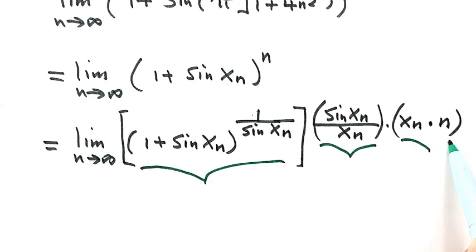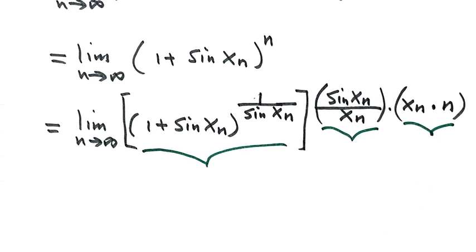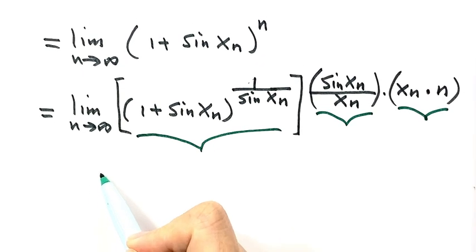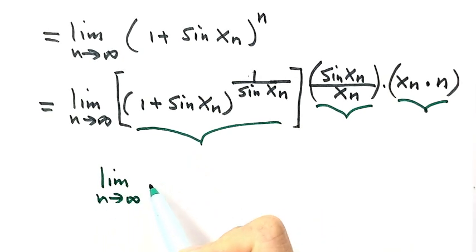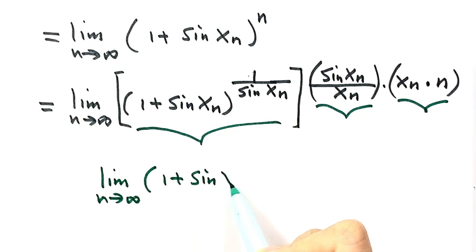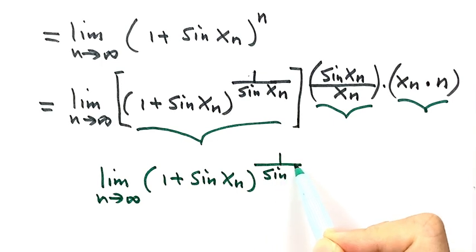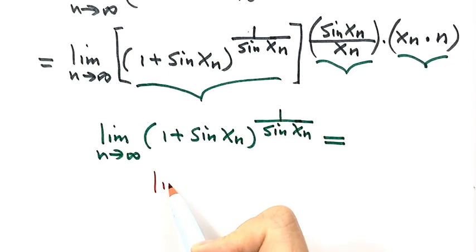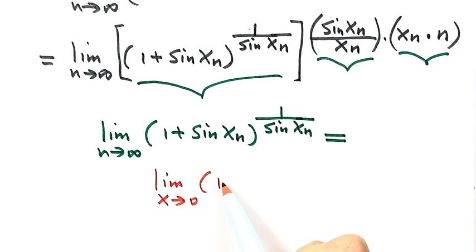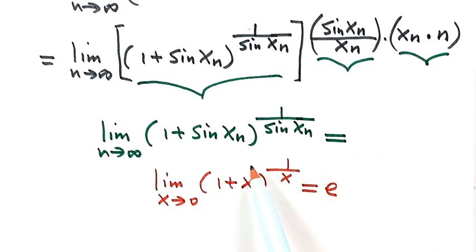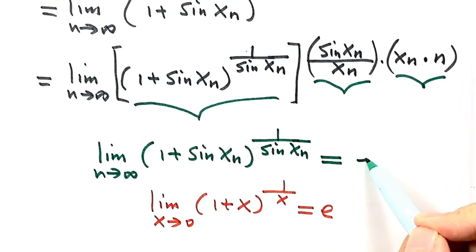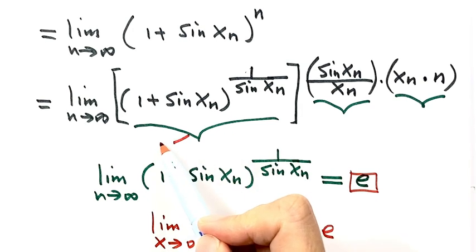The first part is the limit as n goes to infinity of (1 + sine of xₙ)^(1/sine(xₙ)). Because of the standard result that lim(1 + t)^(1/t) = e as t→0, and since xₙ→0, this first part equals e.